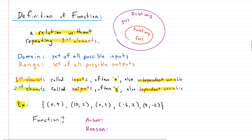Is this relation a function? We go back to our definition: does it have repeating inputs? Let's check. We have a zero here, then a 10, and then a zero again. So we have repeating inputs — that's a problem. The answer is simply no, it's not a function, because we have repeating inputs.